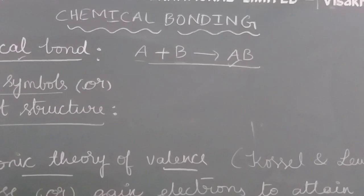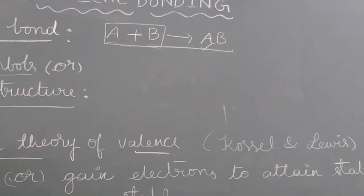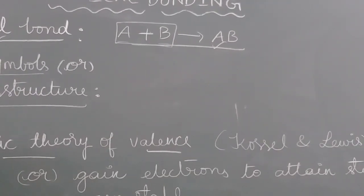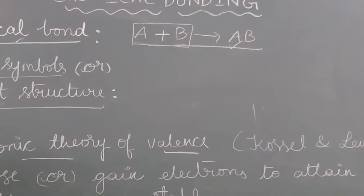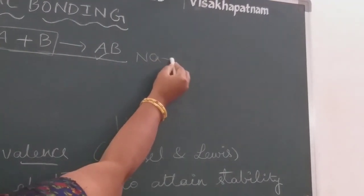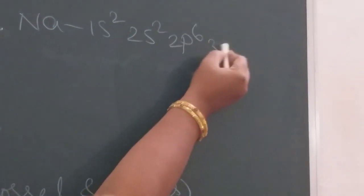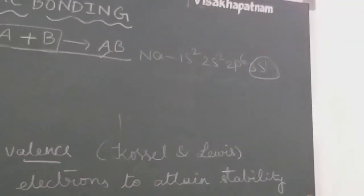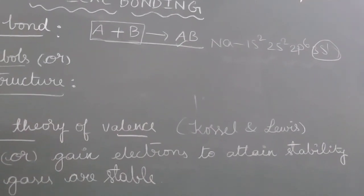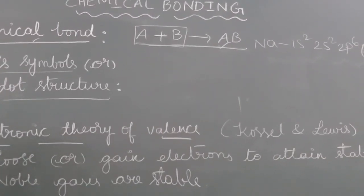In a chemical bond, what is the reason for this bonding? The reason is valence electrons. In an atom, the valence electrons present in the outermost orbit are responsible for the chemical bond. Suppose take the example of sodium — the electronic configuration is 1s2, 2s2, 2p6, 3s1. Here the valence electron is 1. There is only one electron in the outermost orbit, and that electron is responsible for chemical bonding. So in any chemical bond, the valence electrons are responsible for the bonding.